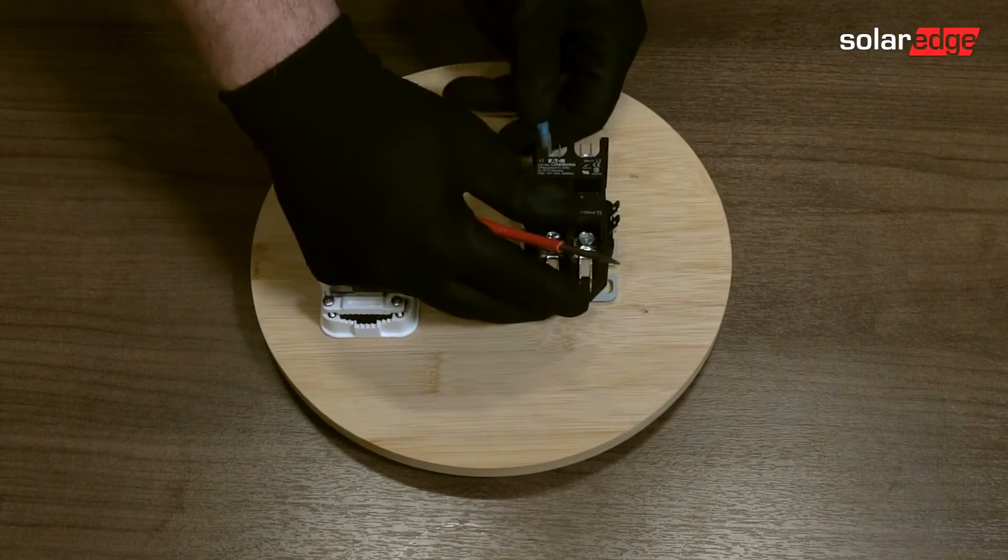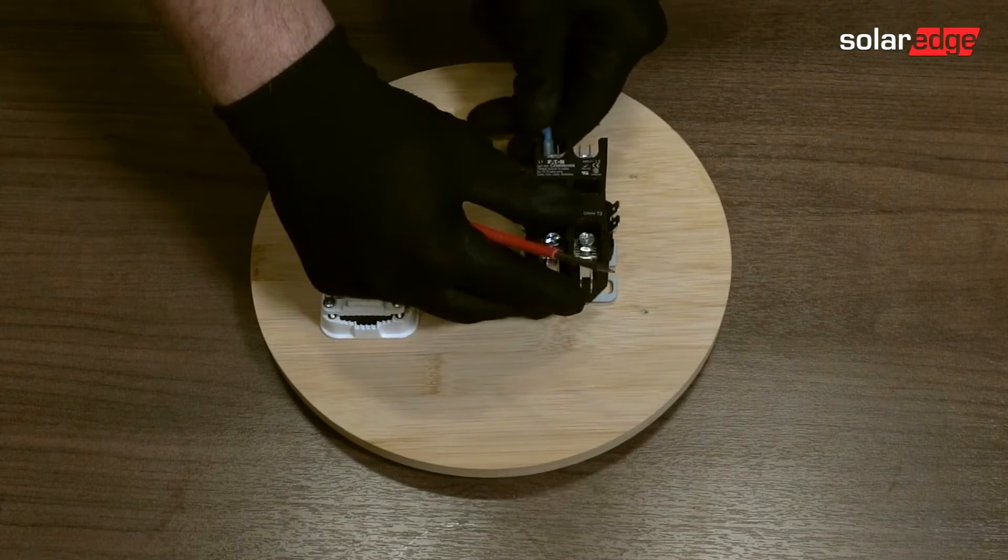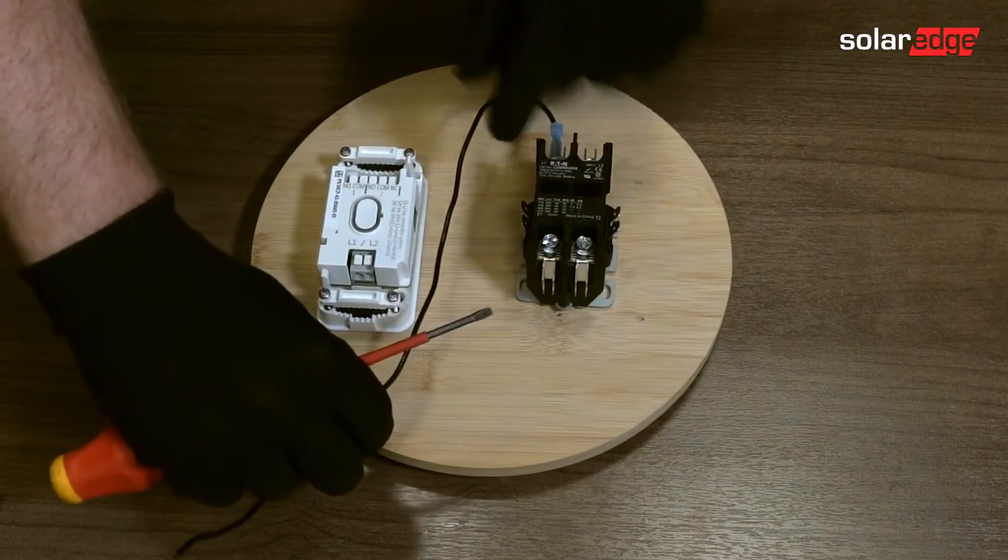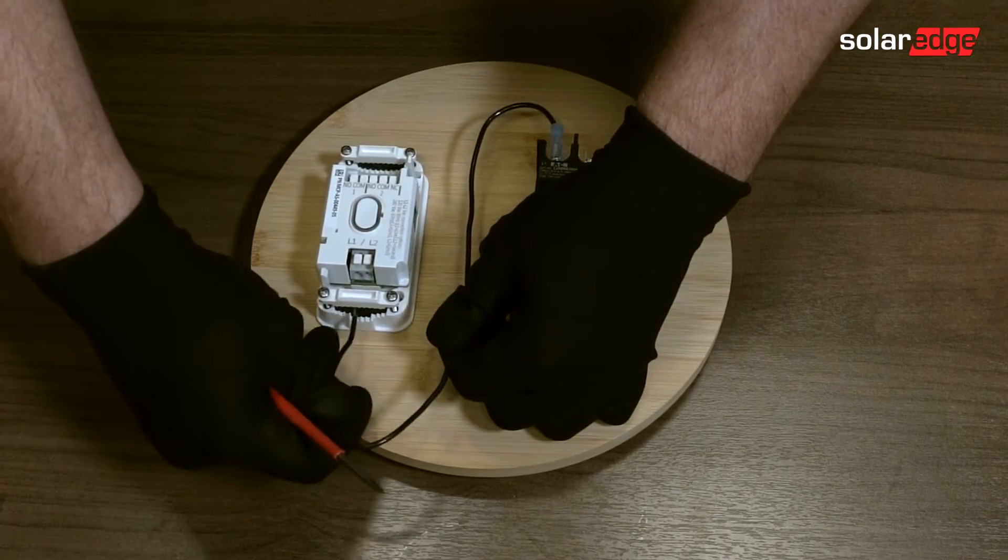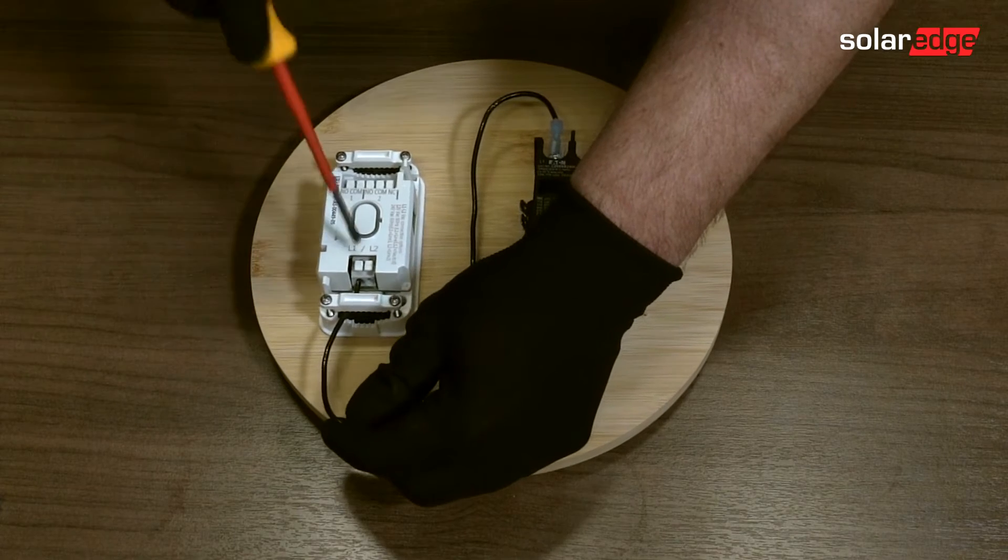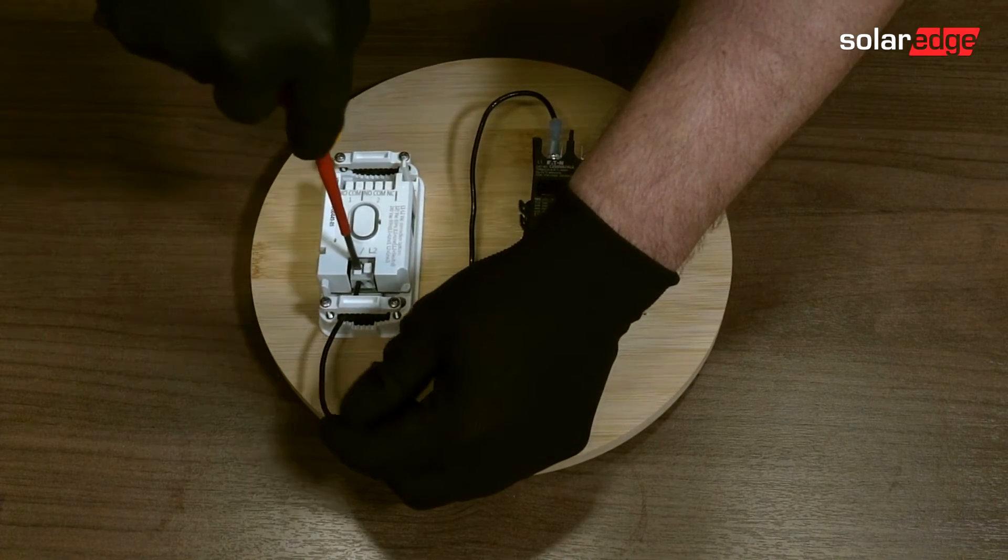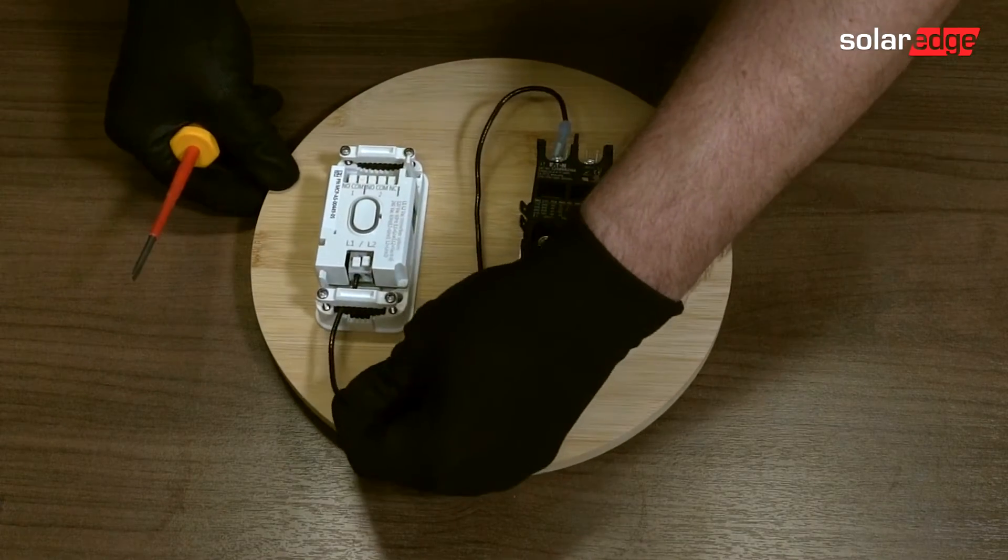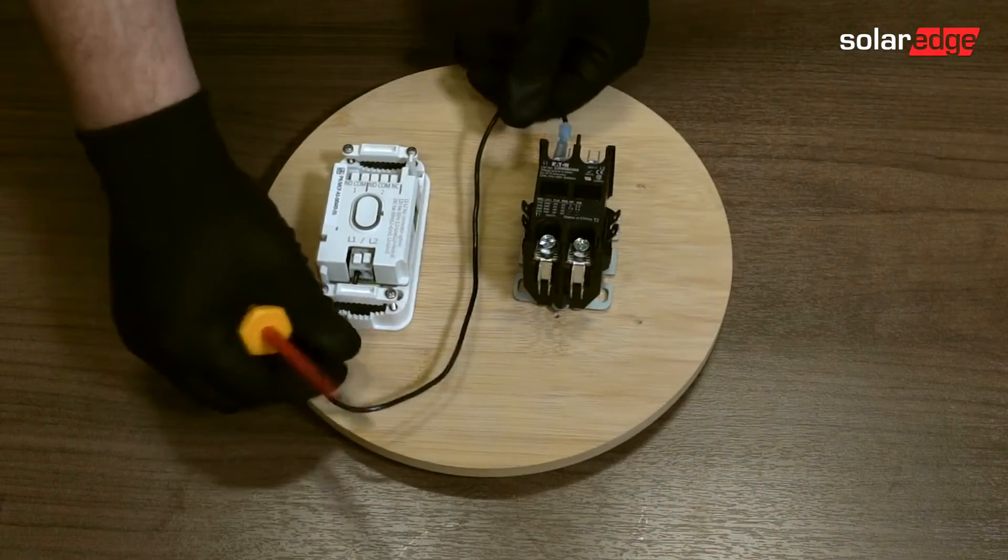So line one, I'm just going to route wires into the line one slot and I'm going to use a flat blade screwdriver to open up the compression spring by pushing down, push the conductor in, and then give a good tug test and you're done.